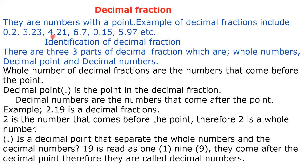In 4.21, the number that comes before the point is the whole number. So a decimal fraction has three components: whole numbers, decimal points, and decimal numbers. The name of the actual point in a decimal fraction is called the decimal point.